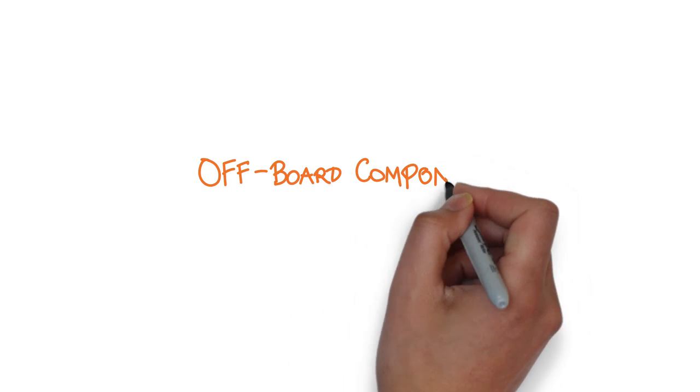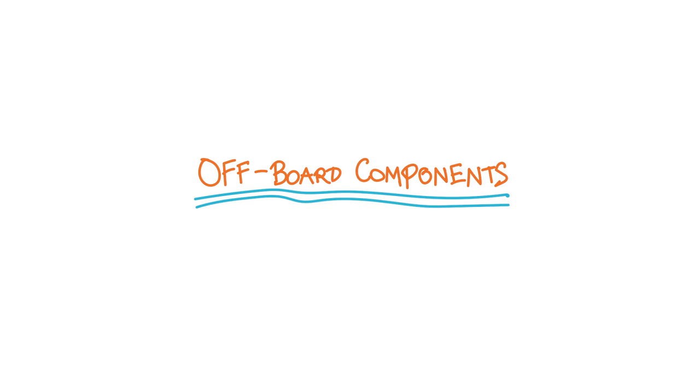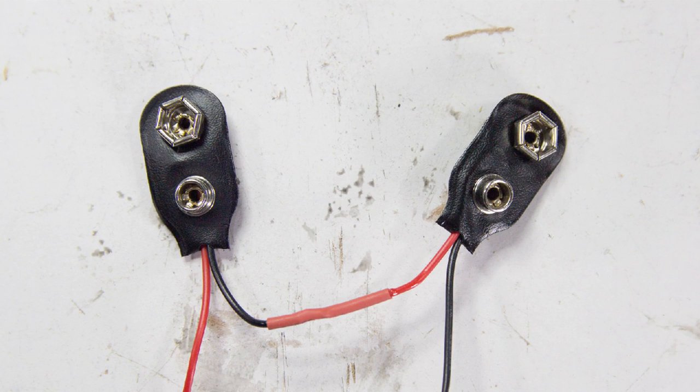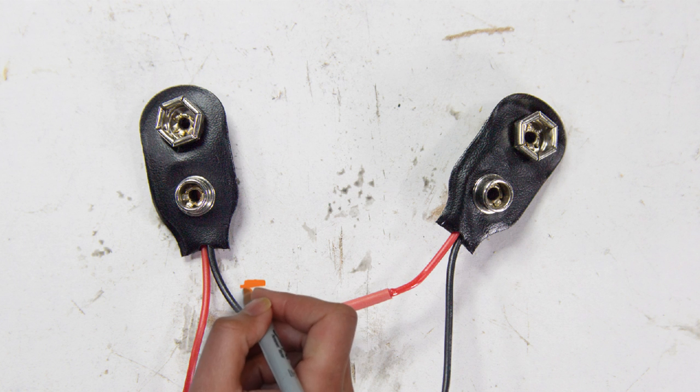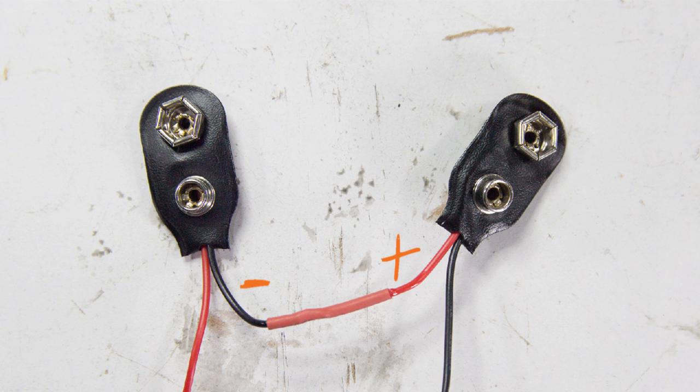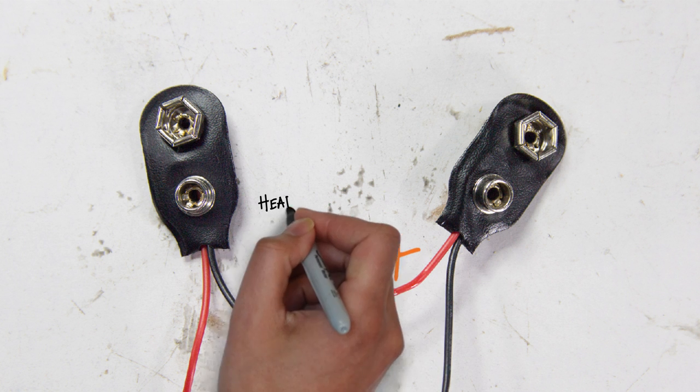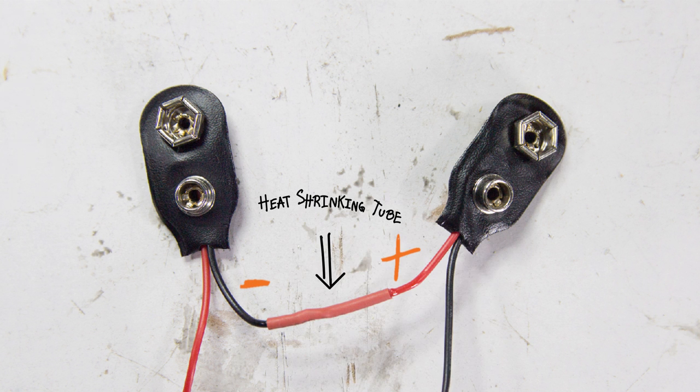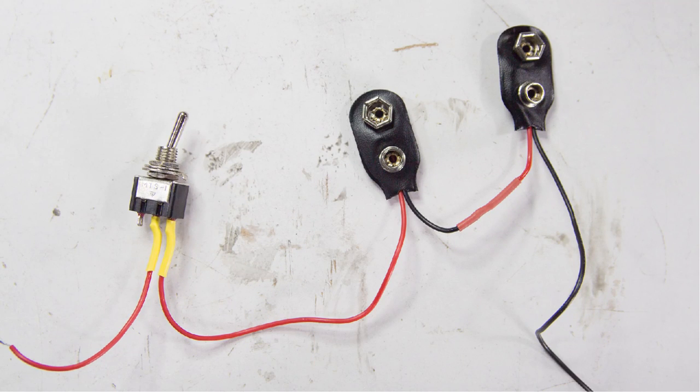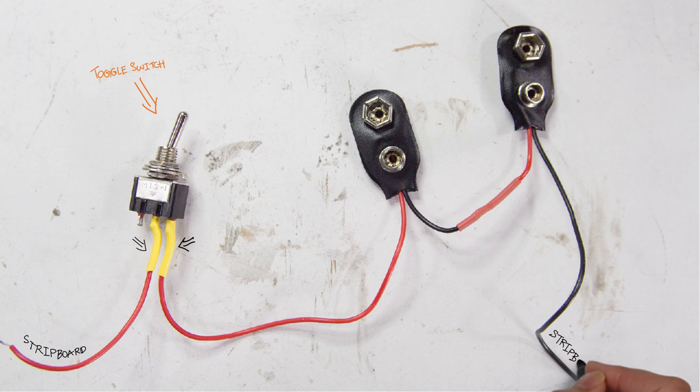Now, let's prepare those off-board components. Here I soldered two 9V battery clips together in series by connecting one's negative lead to the other one's positive lead. Remember to put a heat shrinking tube in first. Next, connecting the remaining positive lead to an on-off toggle switch.